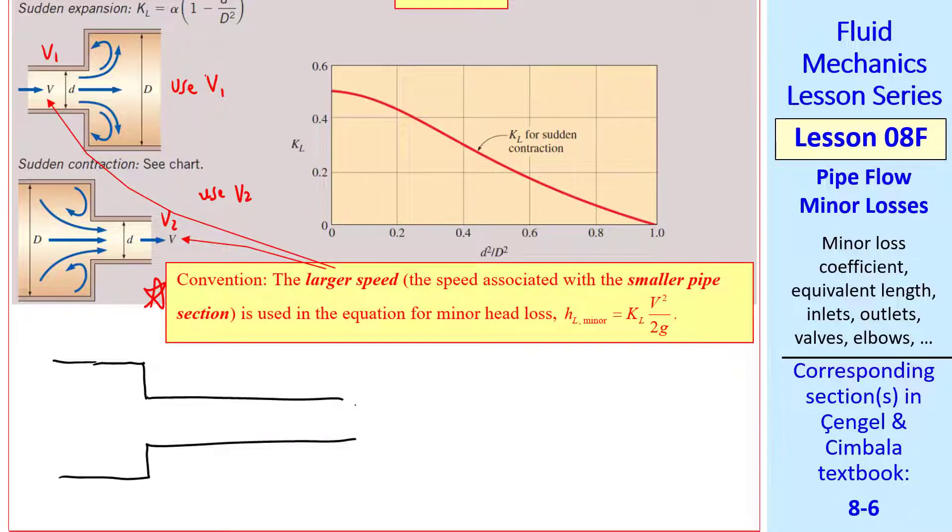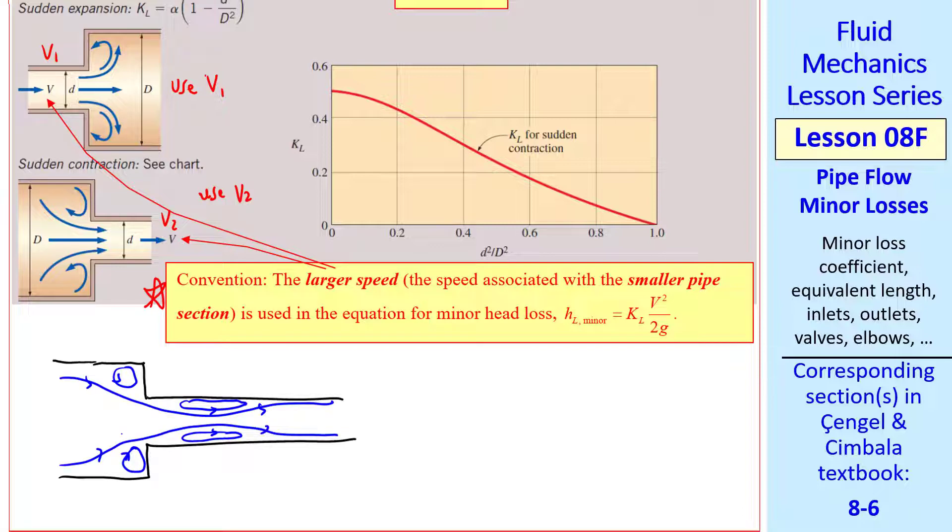I want to discuss a contraction in a little more detail. We get recirculation eddies at these corners. And we get a stretched recirculation eddy just beyond the contraction. The streamlines converge and then diverge. And this high-speed region with a low pressure is called a vena contracta. These eddies cause more dissipation and losses in the flow.